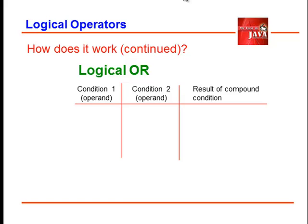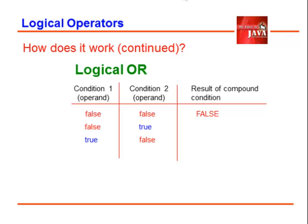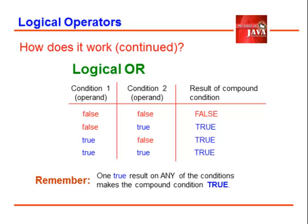Logical OR is just a reverse of AND in terms of handling true operand. If one of each condition is set with true value, the compound condition is set to true. Remember, one true result on any of the conditions makes the compound condition true.